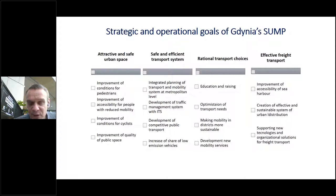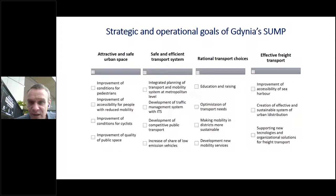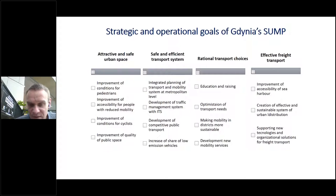We also tried to develop a common vision of mobility. This is always a trade-off between general statements and common agreement. Our starting point was quality of life, linked with economic aspects, environmental aspects, and efficient energy applied to the public transport system. We developed four strategic goals: attractive and safe urban space, safe and efficient transport system, rational transport choices, and effective freight transport — because we have a very specific harbor location almost in the center of the city.